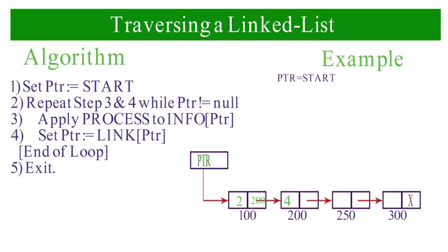At address 200, it processes value 4 and PTR is assigned 250. At memory address 250, it processes INFO[PTR] which is 6, and PTR is assigned 300. At address 300, it processes 8 and PTR is assigned NULL.